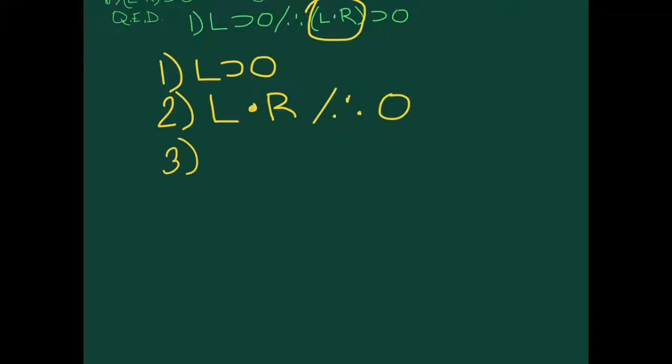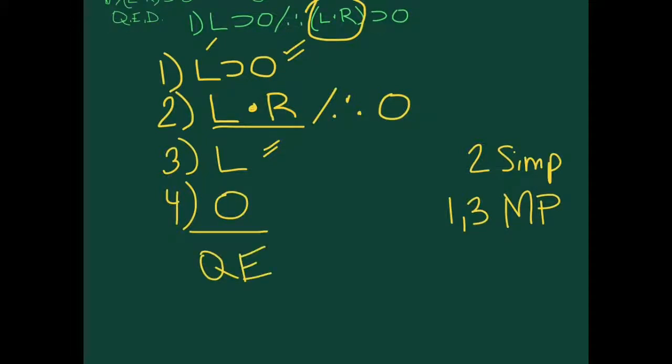We basically made those into individual lines, individual sentences, individual statements. So we put them on two different lines. Now we have to work with L then O, and L and R, and we want to take that. And we can use simplification to isolate one of our terms. Okay, so we isolated out. Now, let's think about how simply we can get to O. So line four, we could use material implication and conclude O using line one and three. Okay, so that is our conclusion. We're done.